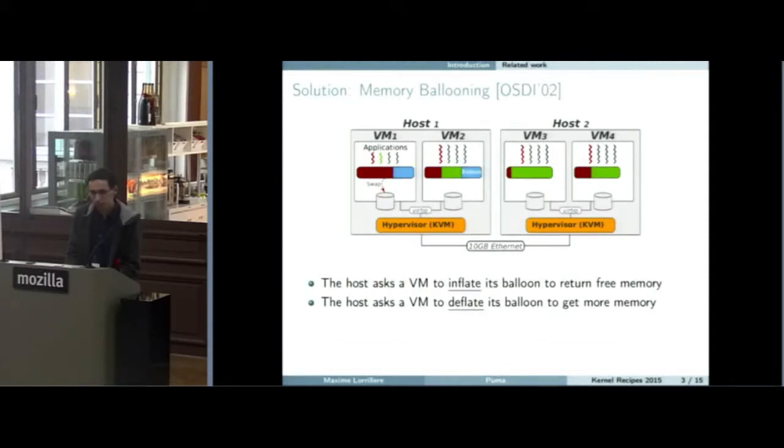One solution for such kind of issues is memory ballooning. The basic idea is to have some memory pinned into the VMs. When a VM needs more memory it will try to deflate the balloon, meaning I need more memory and I ask the hypervisor to have more memory. Then the hypervisor will try to get more memory within another VM, so it will inflate the balloon to give the memory to the first VM.